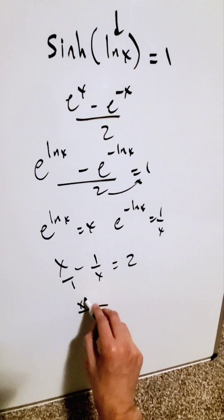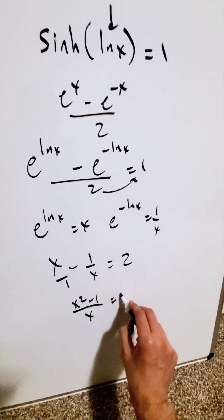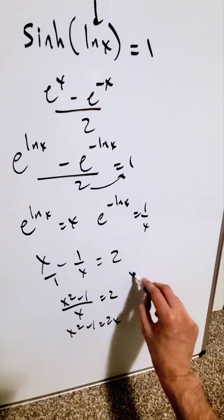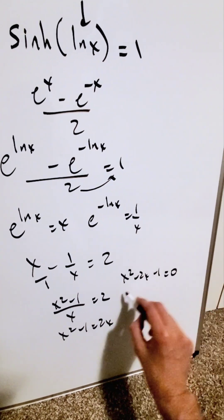Common denominator I have here x squared minus 1 over x is equal to 2. We have x squared minus 1 is equal to 2x and then we can rewrite this as x squared minus 2x minus 1 is equal to 0.